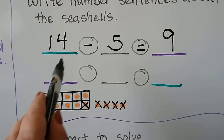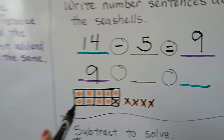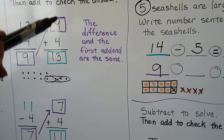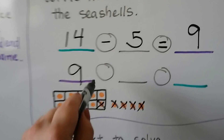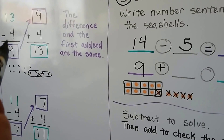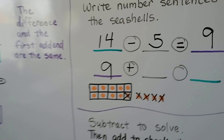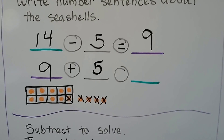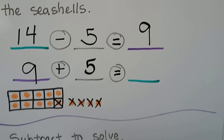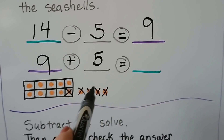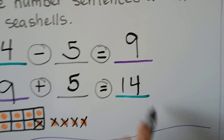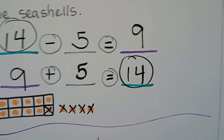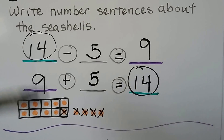This difference is going to become an addend — it moves up here. We use addition, so it's a plus. The other addend is the same number as before: five. Nine plus five, counting on: nine, ten, eleven, twelve, thirteen, fourteen. Our minuend and our sum are the same, so we know we did the subtraction correctly.